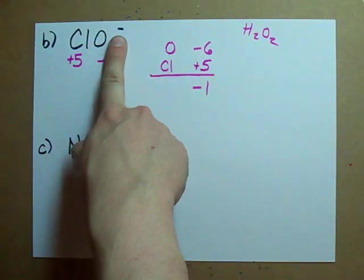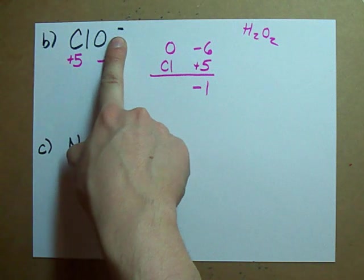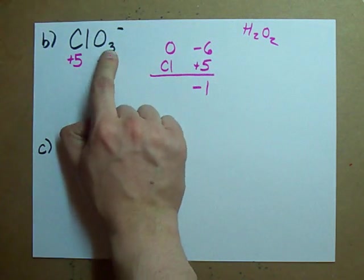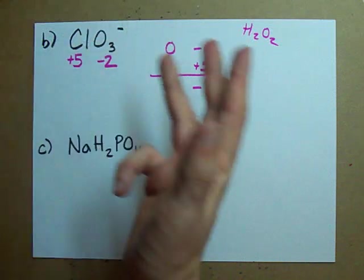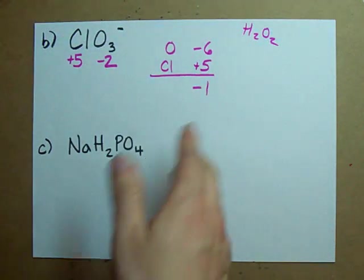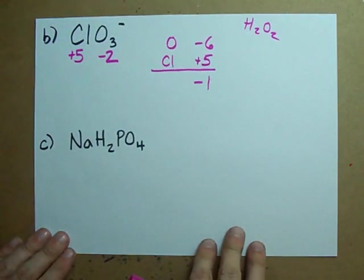But in this case, the oxygen rule took precedence. The oxidation numbers have to add up to minus one, and there's three of these minus twos hanging out. It's got to be plus five. I don't give a crap.